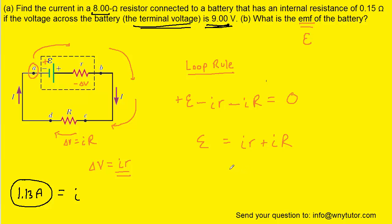And if you want to get fancy, you can factor out an i from both of those terms. So that's going to leave you with lowercase r plus uppercase R. And then we can just fill in the known values.